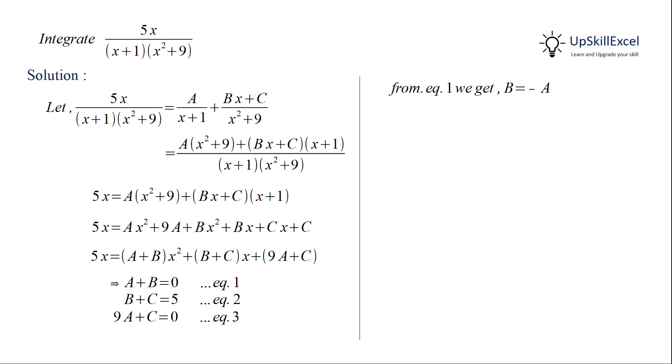We can solve these three simultaneous equations. So from equation 1 we get b is equal to minus a. Subtracting equation 2 from equation 3 we get 9a minus b is equal to minus 5. We already know that b is equal to minus a, so this can be written as 10a is equal to minus 5 or a is equal to minus half. From b equal to minus a we can get b is equal to half. Using either a or b in equation 2 and 3 we get c is equal to 9 over 2.